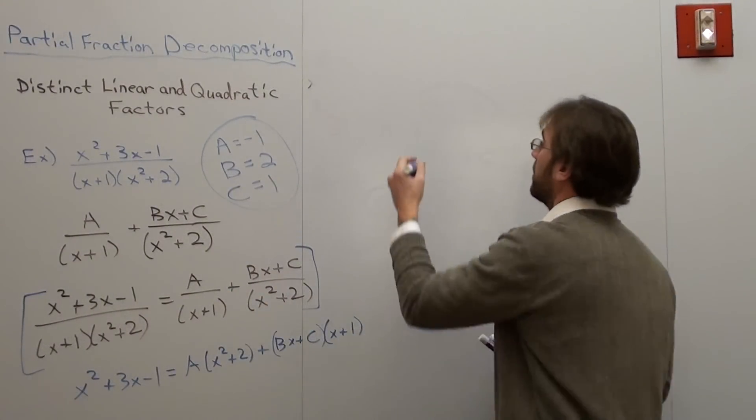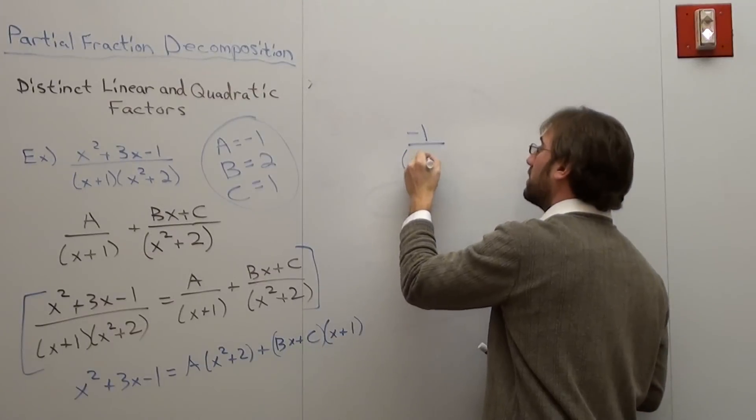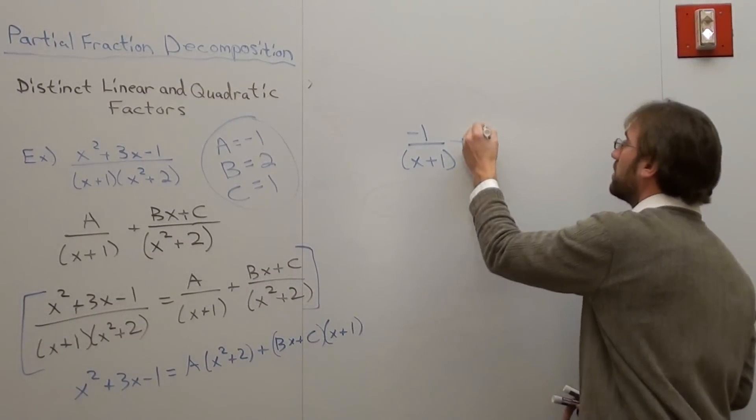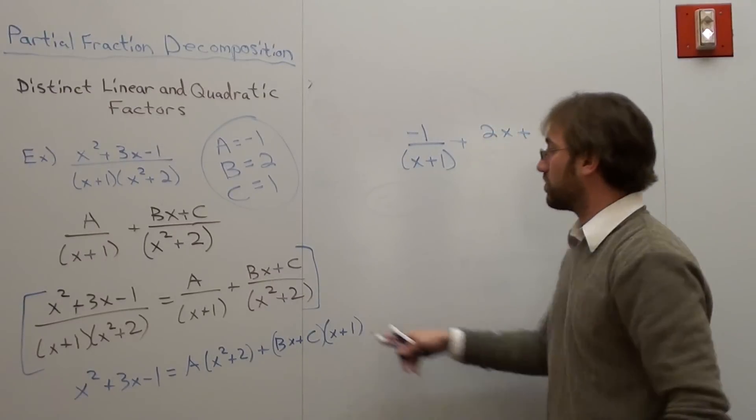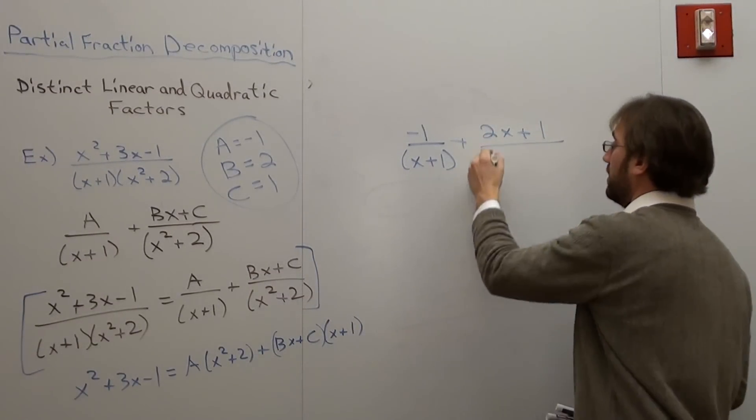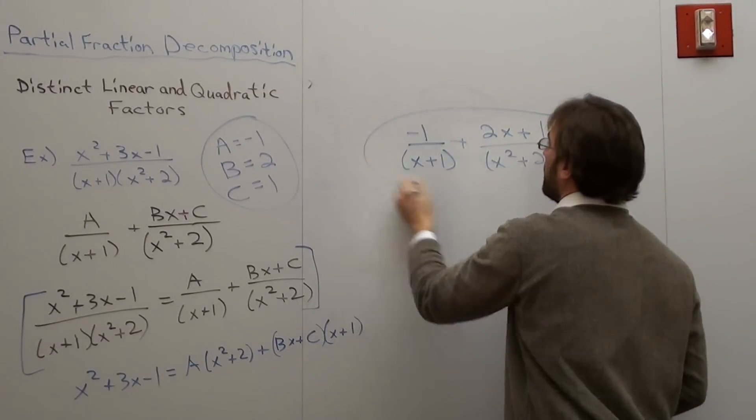This fraction right here turns out to be a over x plus 1. Well, a is negative 1. So it's negative 1 over x plus 1 plus bx plus c. b is 2, c is 1, so it's 2x plus 1, over x squared plus 2. That's that.